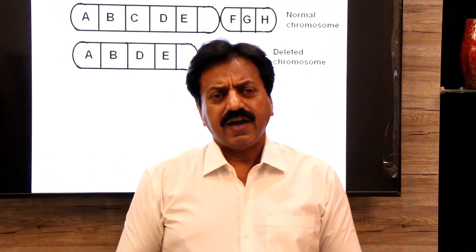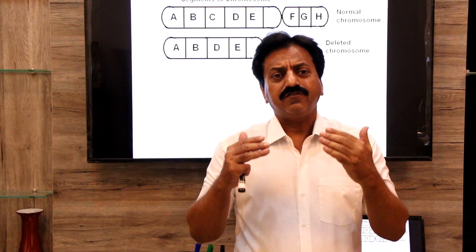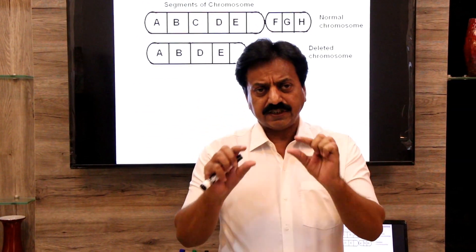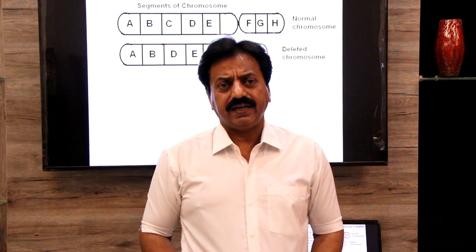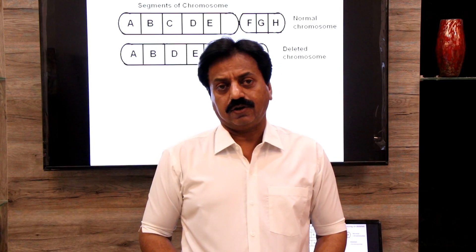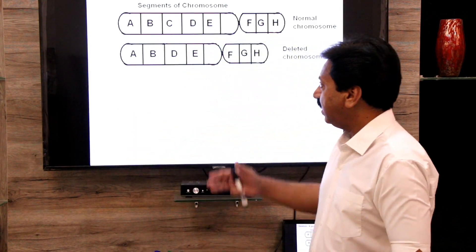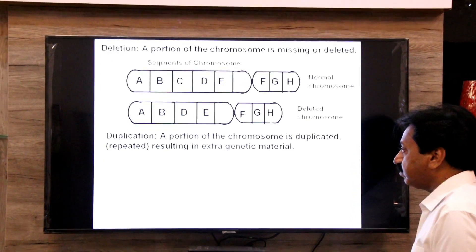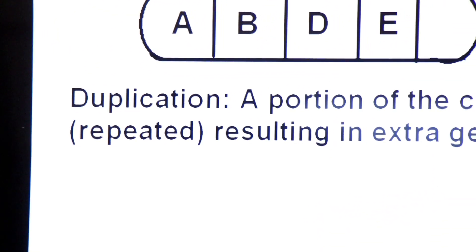This is the normal chromosome and this is the deleted chromosome, in which one portion is missing or removed. Due to deletion in human chromosome number 5, a disorder called Cri du Chat disorder occurs, which we will study shortly.